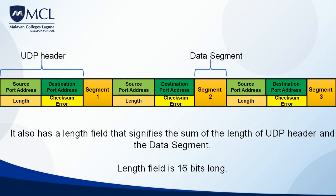UDP also has a length field, which signifies the sum of the length of the UDP header and the data segment — it just tells you how long the UDP header and data segment are together. The data segment is the actual data we divided earlier. The length field is 16 bits long and includes the size of both the UDP header and the data segment.